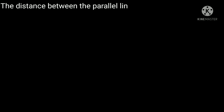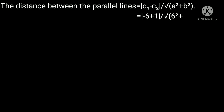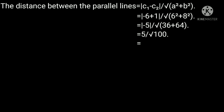The distance between the parallel lines is equal to mod of (c1 minus c2) divided by square root of (a² plus b²). Substituting the values: mod of (minus 6 minus minus 1) divided by square root of (6² plus 8²), that is mod of minus 5 divided by square root of (36 plus 64), which is 5 divided by square root of 100. The square root of 100 is 10, so that equals 5 divided by 10.